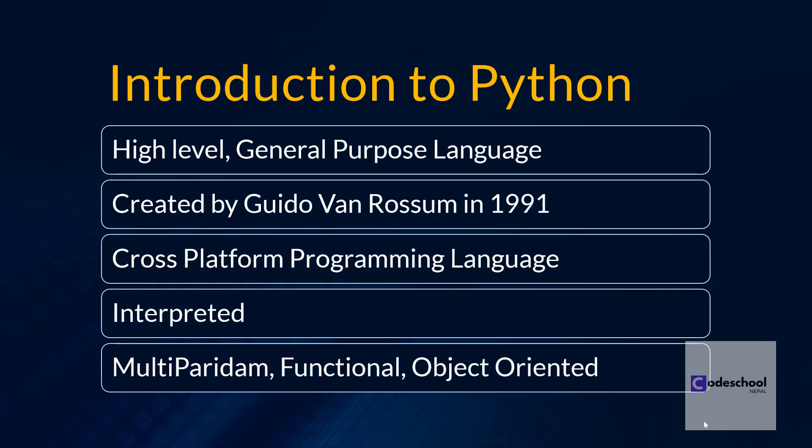Introduction to Python: Python is a high-level, general-purpose programming language. High-level means we write Python programs in a human-readable language, almost like English. Being a general-purpose language means we can use Python to solve problems in different generic fields — for example, biomedical engineering problems, scientific computing, machine learning, and all kinds of general problems. That's why we call it a general-purpose language.